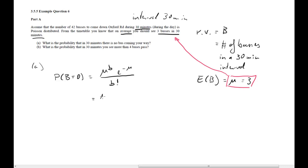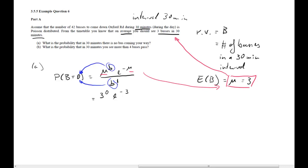In our particular case, we substitute b=0 and mu=3. So we have 3 to the power of 0, times e to the power of negative 3, divided by 0 factorial. Since 3 to the power of 0 is 1, and 0 factorial is defined as 1 (a special case for factorials), all we need to calculate is e to the negative 3.